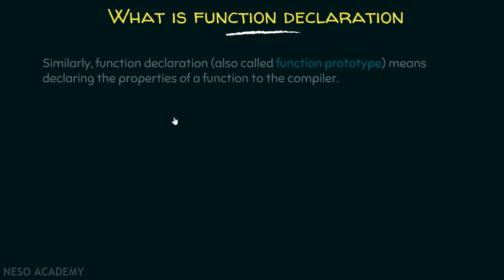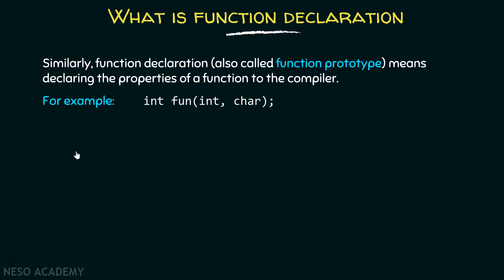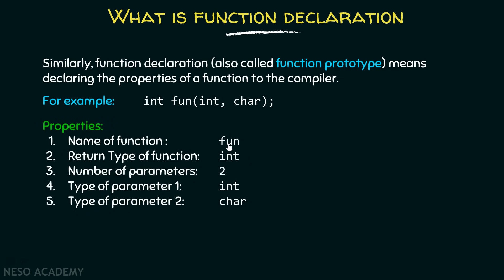Similarly, function declaration, also called a function prototype, means declaring the properties of a function to the compiler. For example, this is the way we write the function prototype. The properties of function 'fun' are: name is 'fun', return type is int, number of parameters is two, type of parameter one is integer, and type of parameter two is character. Please remember that a function prototype always ends with a semicolon.